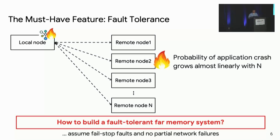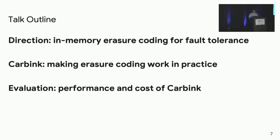We assume fail-stop faults and no partial network failures, as far memory systems are normally deployed within a single cluster with reliable networks. But even under this assumption, it is still hard to achieve efficient fault tolerance. In this talk, I will first go through why in-memory erasure coding is a good direction for far memory fault tolerance, then present how Carving makes in-memory erasure coding work in practice, and finally evaluate the performance cost.